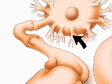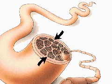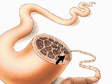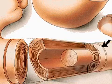The epineurium is a fibrous sheath that surrounds the whole nerve. The perineurium is the connective tissue sheath that surrounds bundles of nerve fibers. The endoneurium is the fine sheath of connective tissue around each nerve bundle.